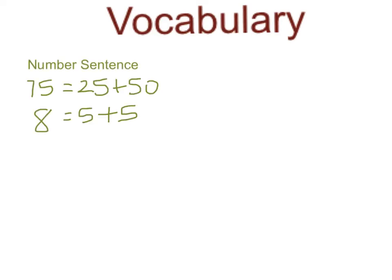Our first vocabulary term today is number sentence, and this is basically two expressions with a relation symbol. So both of these expressions down below are number sentences, and they're different kinds of number sentences. But here's what's important. This is what's known as a relation symbol. The addition symbols are what is known as operation symbols.